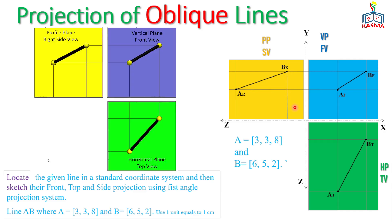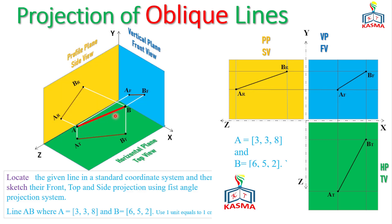Looking at the projections of line AB across all three principal views, all projected lines are inclined and foreshortened — none shows the true length. All lengths are diminished, meaning the true size and shape of the oblique line cannot be seen directly in any of the three standard views.